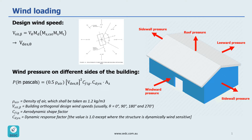The second step is to measure wind pressure on different sides of the building with this formula, as you can see here. P, or wind pressure, is measured in Pascals, and it's a factor of rho, which is the density of air, which is 1.2 kilograms per cubic meter.